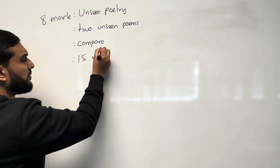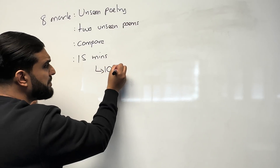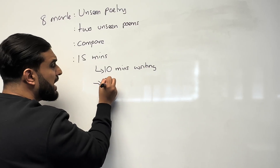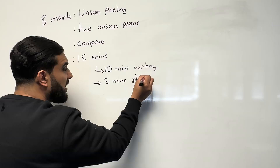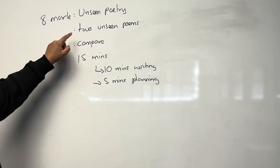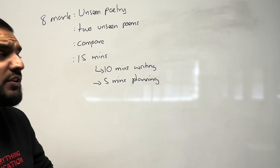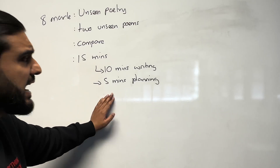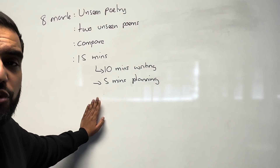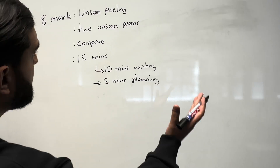It's only an eight mark question, so you are given approximately 15 minutes. You want to spend 10 minutes writing and a maximum of five minutes planning. So to be clear: it's eight marks, you're looking at two unseen poems, you have to compare them for either similarities or differences, and you have a total of 15 minutes — 10 for answering and five for planning.